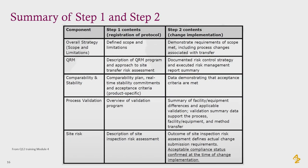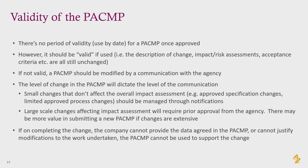In summary, taking from ICH Q12 training module four, those are the components and step highlights for a PACMP, with the correspondence between step one and step two. Importantly, a PACMP doesn't have a fixed validity in terms of data — there's no point at which it simply becomes out of date. However, the validity of the risk profile can change over time. Whenever you use the PACMP, you must assess whether the original risk profile is still valid, particularly as you gain more knowledge of the product. If the validity changes, you need to interact with the agency to update the PACMP.